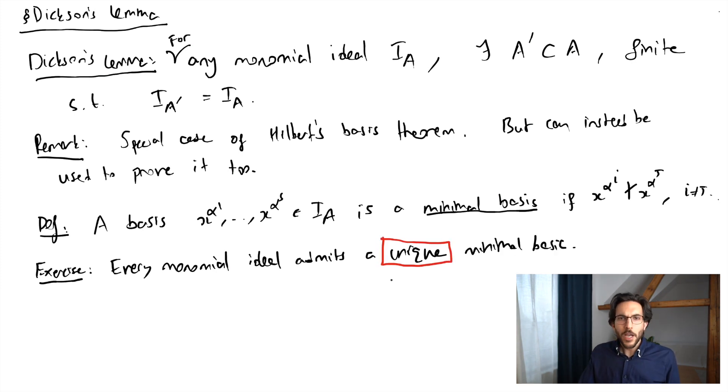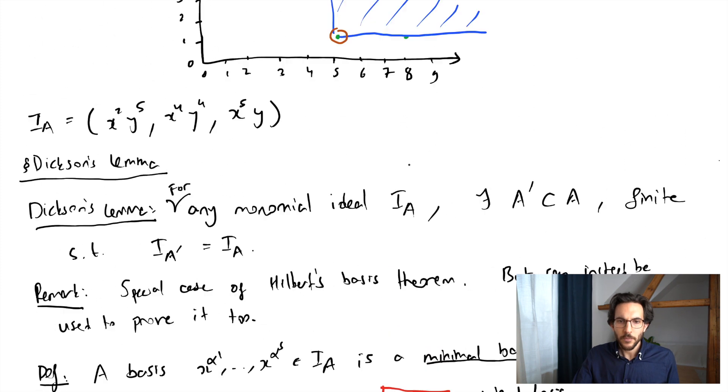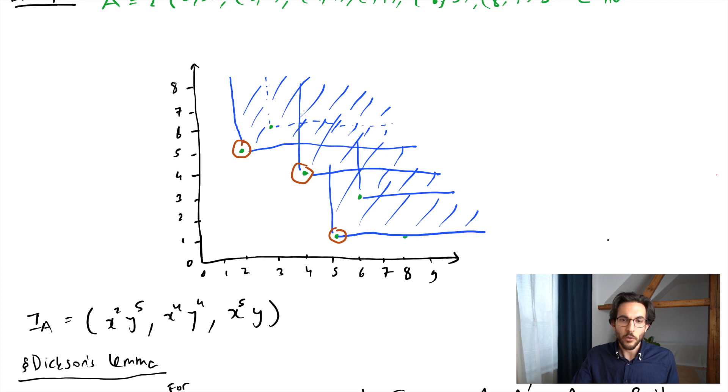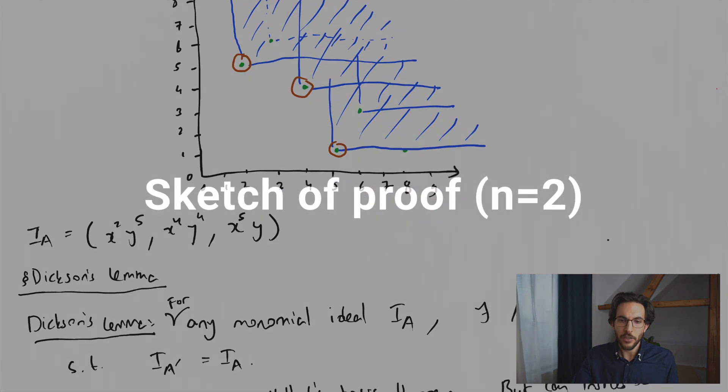If you think back to the picture we drew in the previous lecture, we're simply saying that the corners generate the ideal, and these corners form a minimal basis. This was a two-dimensional picture, so there are corners also in higher dimensions, and they are your minimal basis.